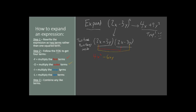Now we multiply the inner terms — this negative 3y with this 2x. Handle the numbers first, then the letters. Negative 3 times 2 is again negative 6, and x times y is again xy. That takes care of the inner terms.